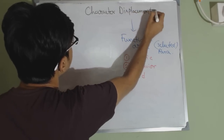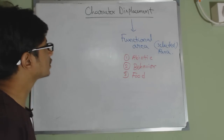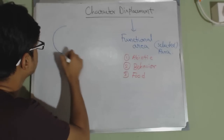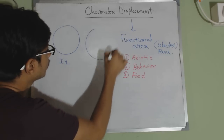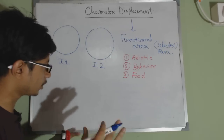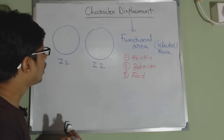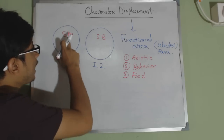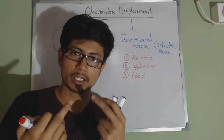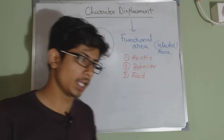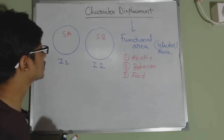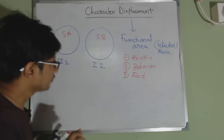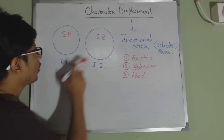So the idea of character displacement: let's say there are two different islands — island one and island two. We're talking about two different species: species A and species B. Now if these two species have the same niche, they have the same kind of beak structure — a very strong beak to crack seeds of some fruit to survive. Species A and species B have very similar beak size and shape.